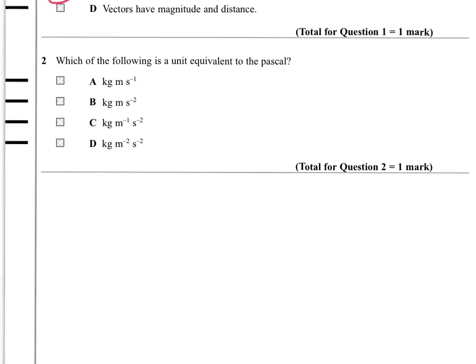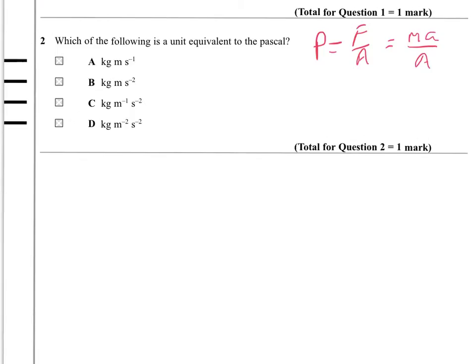Which of the following is a unit equivalent to the Pascal? So Pascals come from pressure equation. Pressure is force over area. So we're looking for something that matches up with force over area. Pressure is force over area, and F equals MA. Then pressure is MA over area. MA is kilograms times meters per second squared. And then we're dividing by meters squared, or multiplying by meters to the minus two. So the meters is going to partly cancel with the meters to the minus two. So we end up with kilogram meters to the minus one second to the minus two. And that's C.